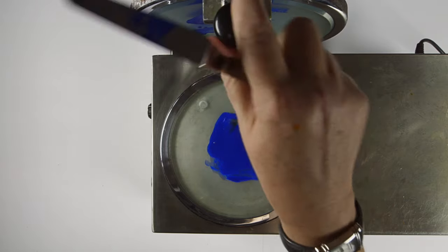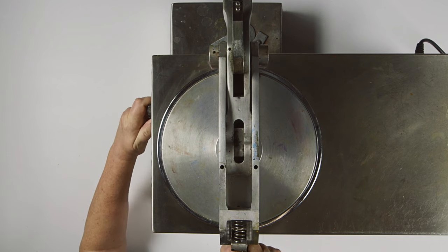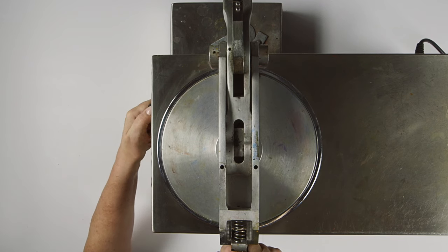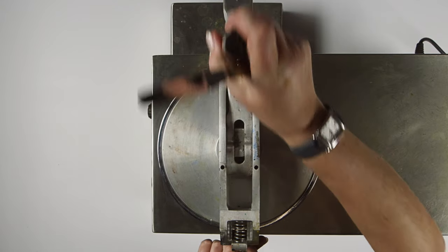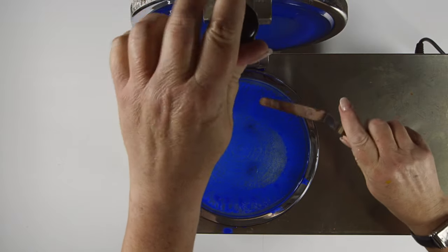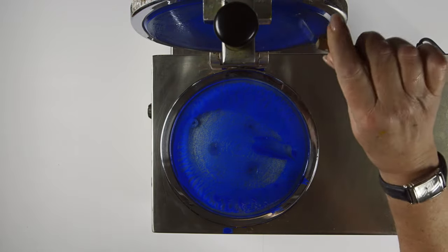The top plate is brought into contact with the bottom plate and set to run for 25 revolutions. The plates are taken apart and the paste is then collected back into the centre of the bottom plate and the process is repeated for another 25 revolutions.